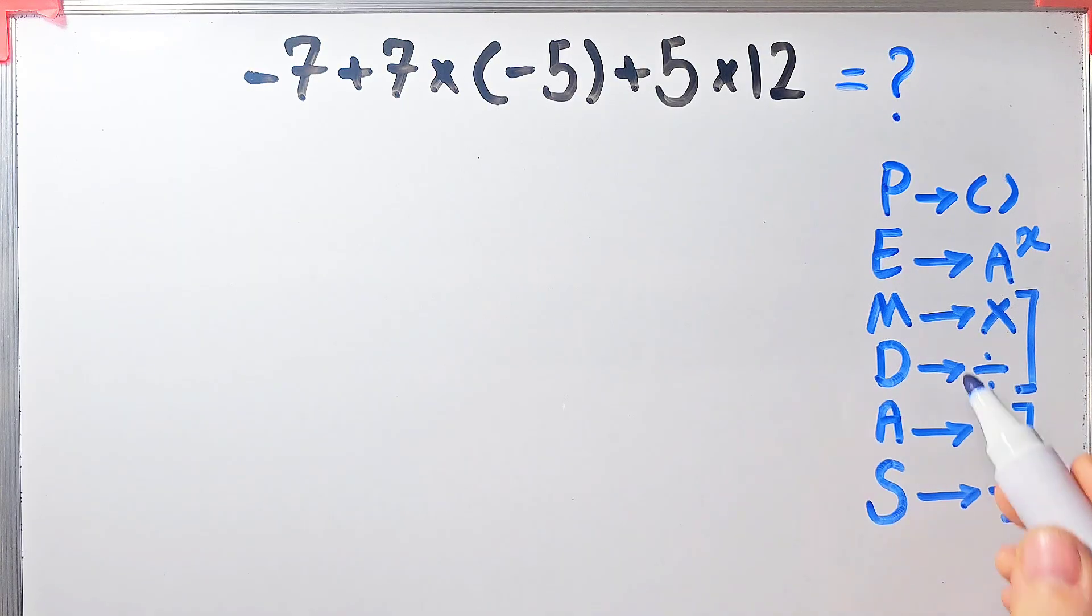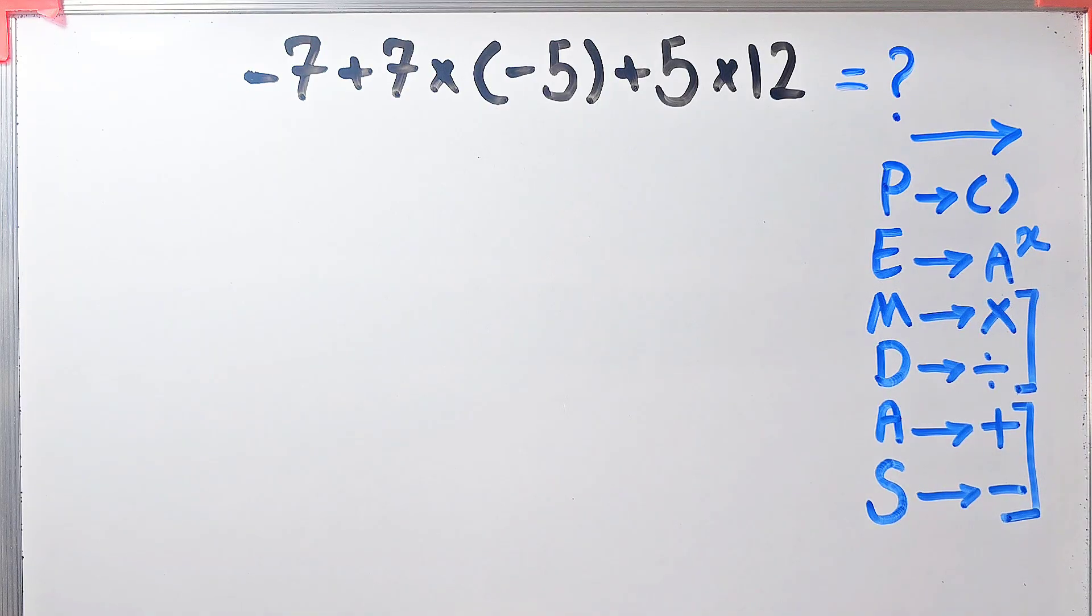According to the PEMDAS rule, first we simplify this multiplication: seven times negative five.